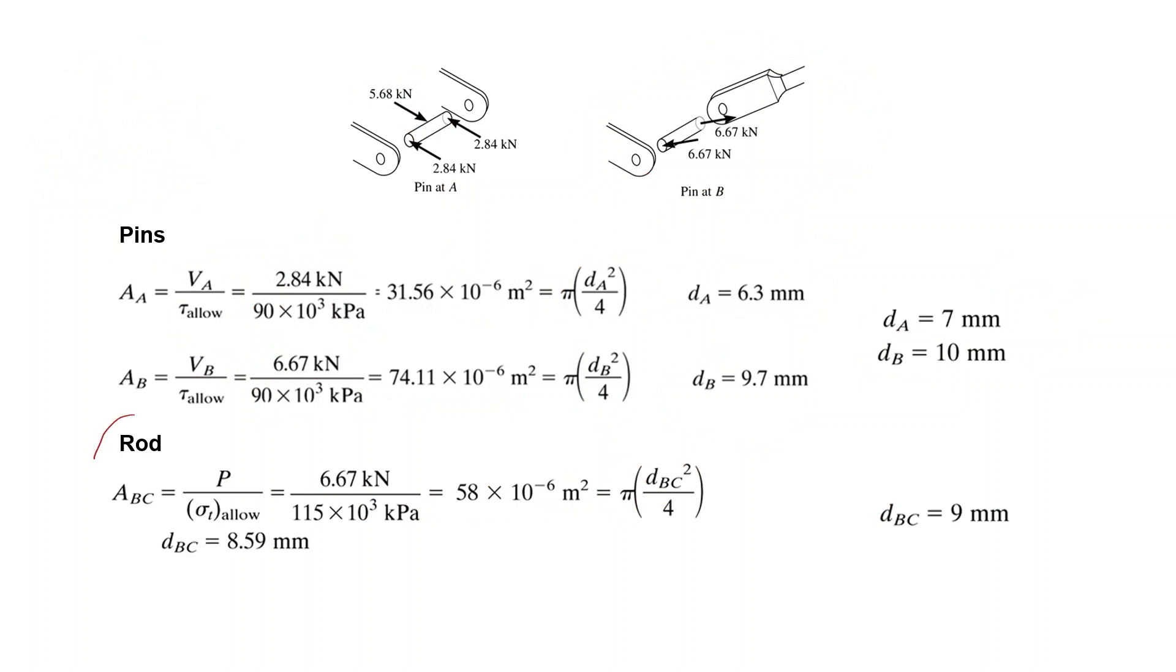Next, the diameter of the rod. We know the rod is BC. The force is 6.67 kN. Now it's under tensile load. We take the allowed tensile stress of 115 MPa, determine the area, and for this area the diameter of the rod should be 8.59 mm. So the next millimeter level is 9 mm.